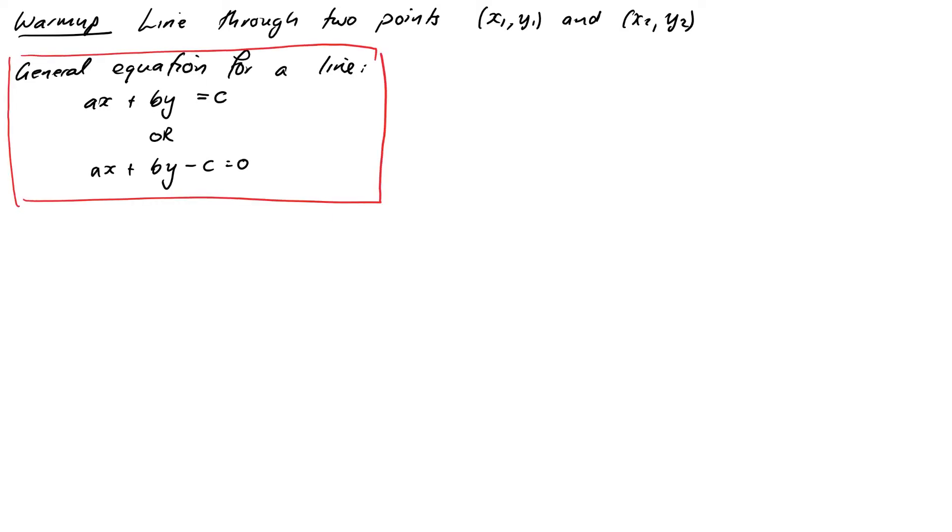So what we're going to do is substitute in our two points and what this will give us is two equations but the unknowns in this equation are actually going to be the coefficients a, b and c. So it's a little bit of a head scratcher to try and wrap your head around this because we're not used to these coefficients being the unknowns. So our two equations would be ax1 plus by1 minus c equals 0 and ax2 plus by2 minus c also equals 0. The things that we know are the x's and y's and the things we don't know are the a's, b's and c's.